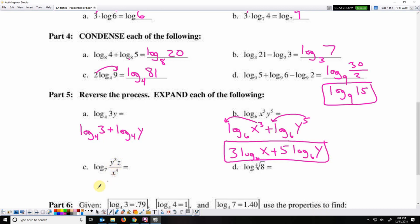Here I've got three different variables, so I'm going to have three different logarithms. First, I've got y to the third power, so that would be 3 times log base 7 of y. Then times z means plus log base 7 of z. And divided by x to the fourth means minus 4 times log base 7 of x.